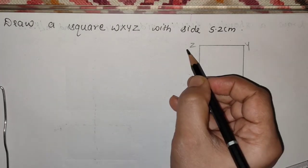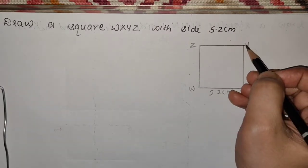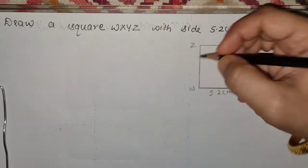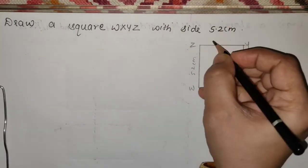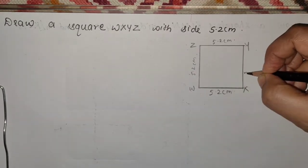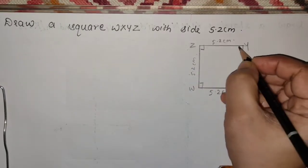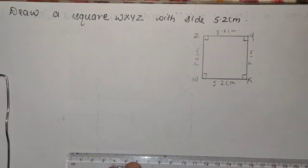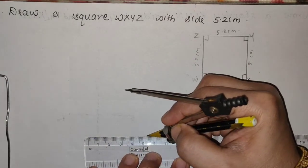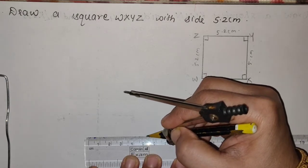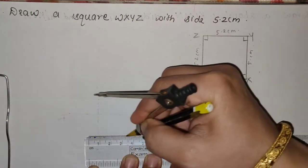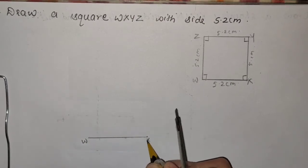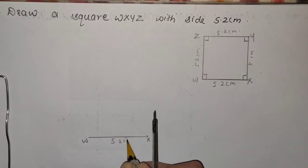WXYZ — अगर यहाँ से start कर रहे हैं तो WXYZ — you will not lift your hand and change direction. Now we know that all the sides are equal in square: 5.2, 5.2, 5.2. Each angle is a right angle. Now we will construct. First we will draw the base 5.2 — this is your WX, according to the rough figure, 5.2 cm.